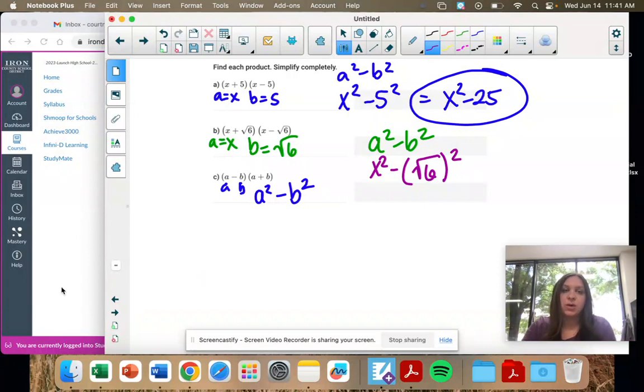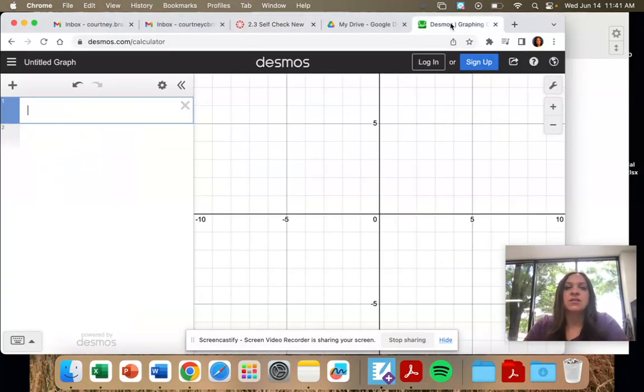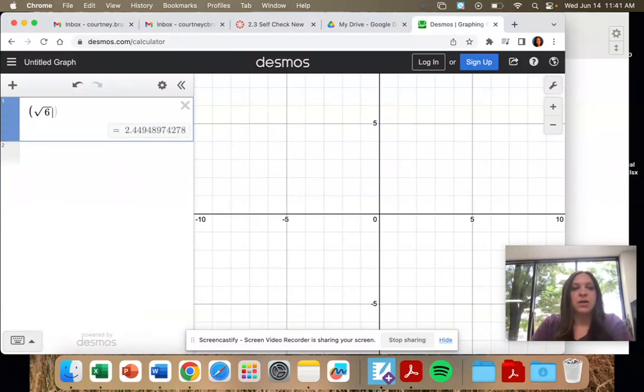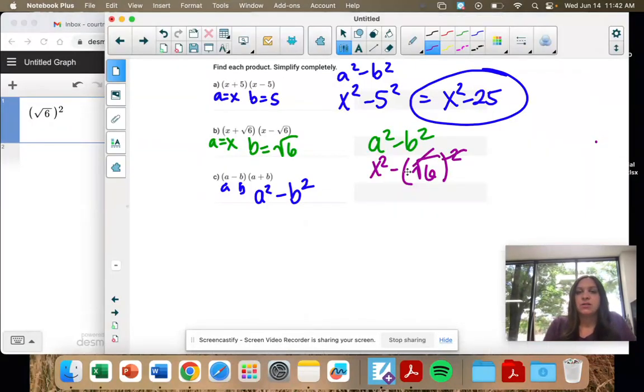Remember, square and square root are opposites. If you square a square root, you're just left with the number inside. Those are opposite operations, right? So we have X squared minus 6 on that one.